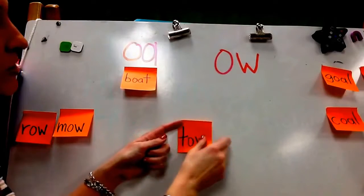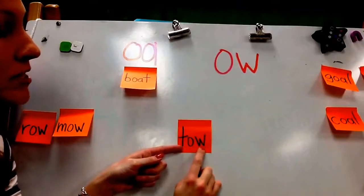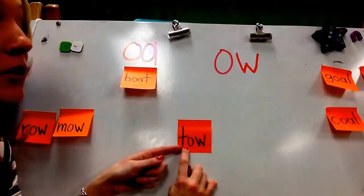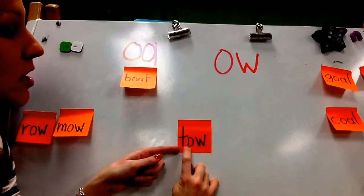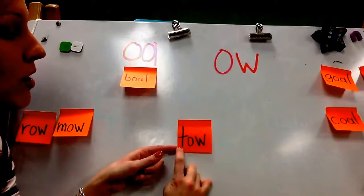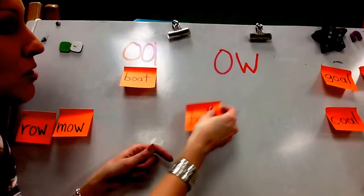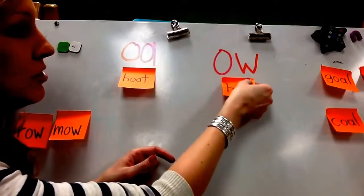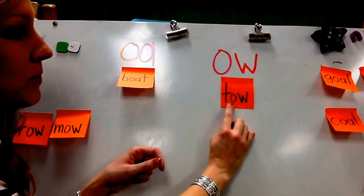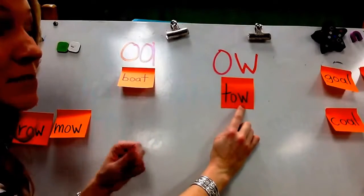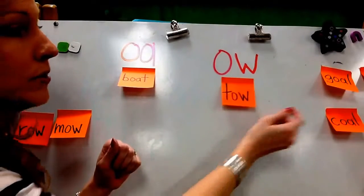Here is our next word. I see OW, so I'm going to read that as O — tow. So I'm going to sort this word under OW because that's making the O sound in that word.